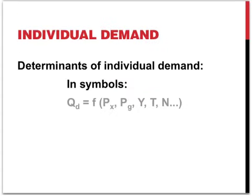The determinants of demand can also be expressed in symbols. The quantity demanded is a function of the price of the product, the price of related goods and services, income, tastes and preferences, and the size of the households.